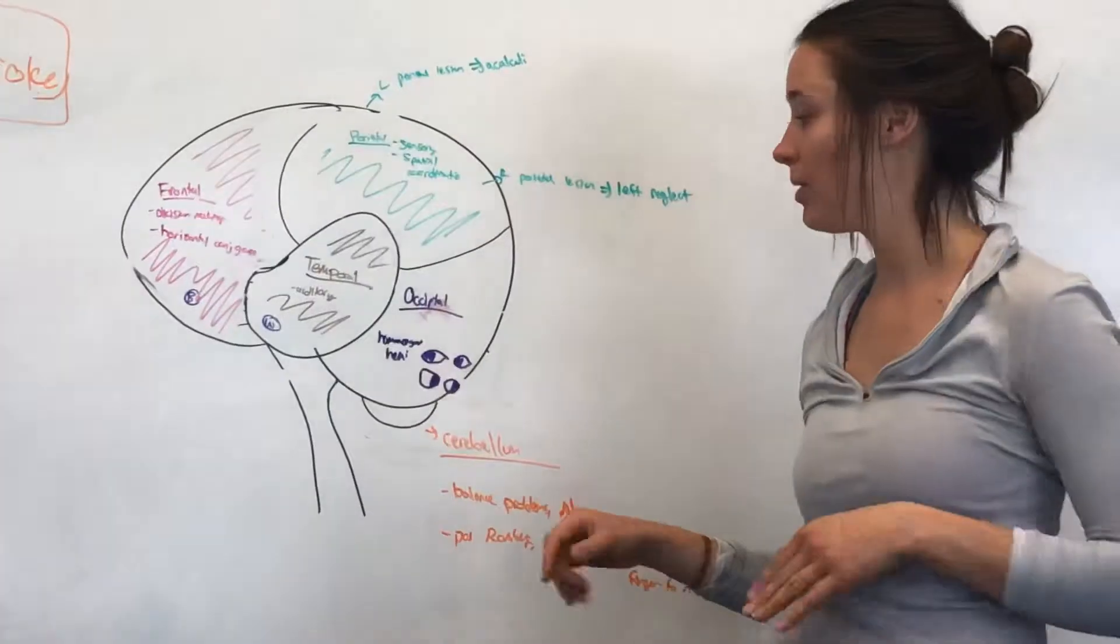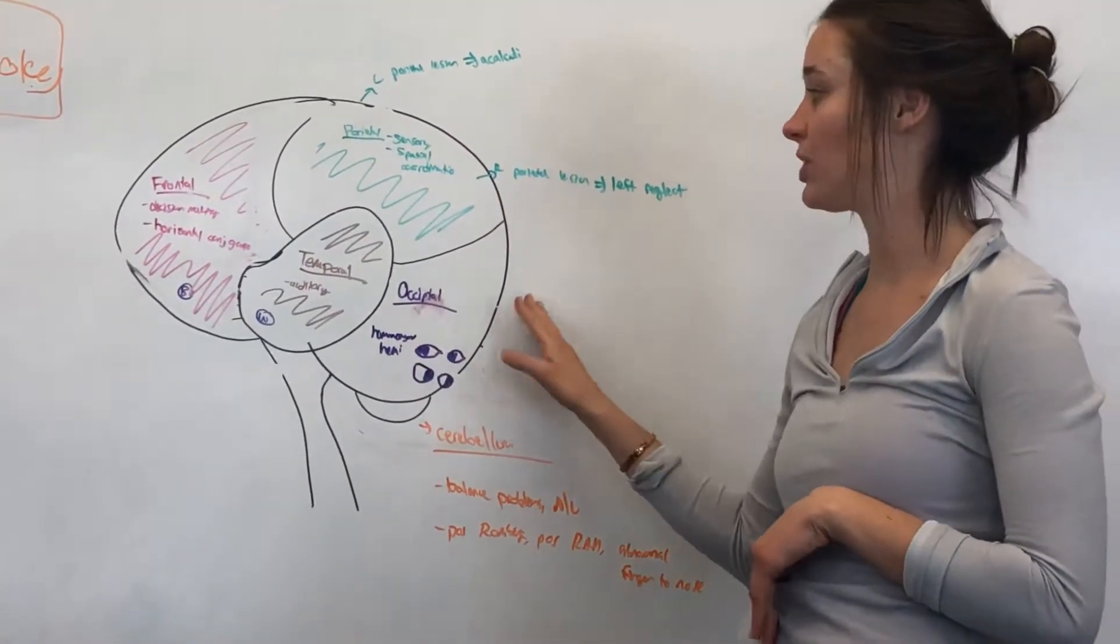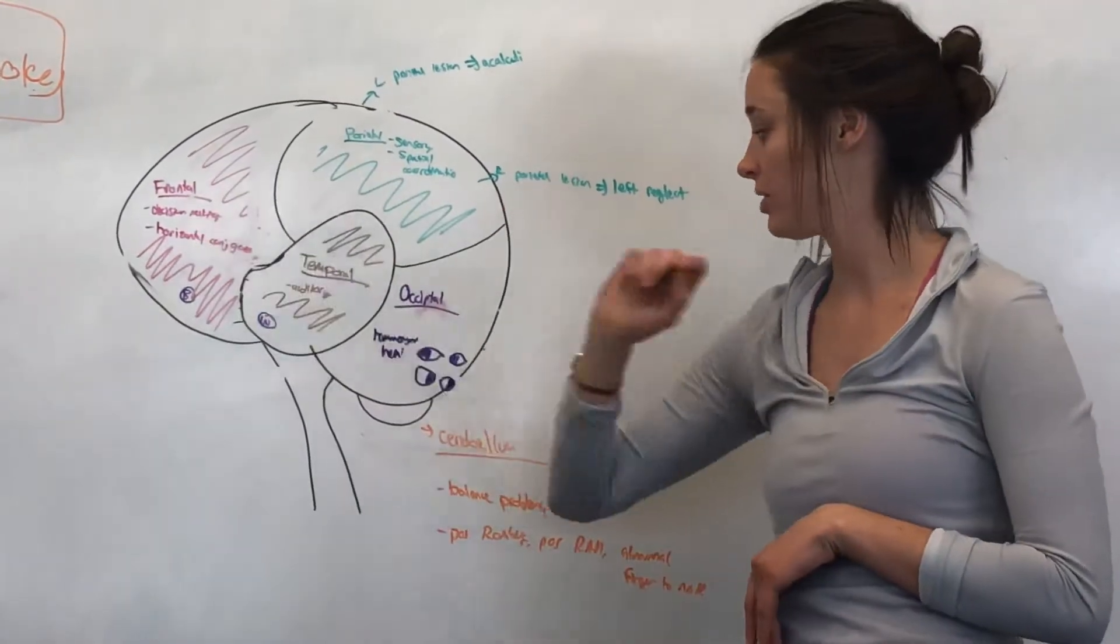That is going to be an occipital lesion. So make sure you don't confuse that with the horizontal conjugate gaze in the frontal lobe.